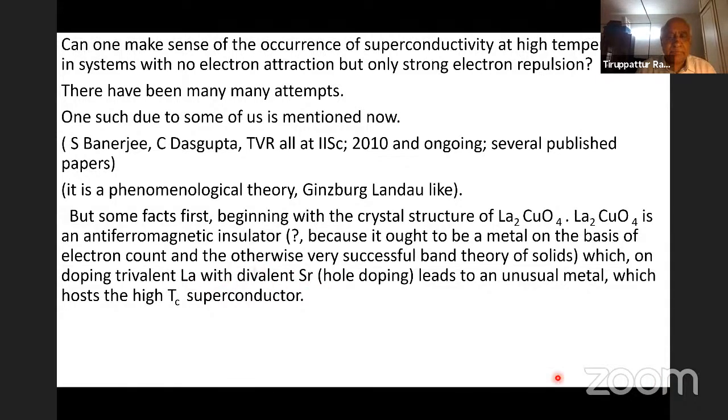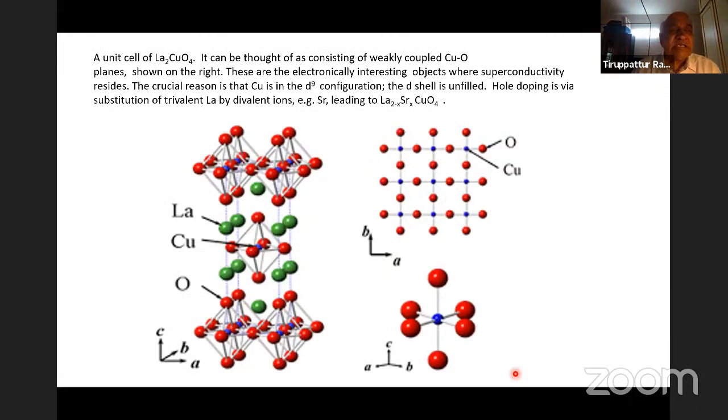The work started more than 10 years ago and is still going on. It's a phenomenological approach to the problem of having superconductivity in such a system in which the electrons strongly repel each other. Before I talk about that, I will say a few things about these cuprates beginning with their structure. Here I am showing a unit cell of lanthanum cuprate. You can see that it's somewhat long and the unit cell is about maybe 11 angstroms long and maybe about 4 angstroms or 3 angstroms wide. I have shown these as red spheres. These are oxygen atoms. The blue ones are copper atoms and the green ones are lanthanum. If you substitute some lanthanum atoms by strontium, then you have lanthanum cuprate doped with strontium and at a certain level of doping, which is called hole doping, superconductivity develops.